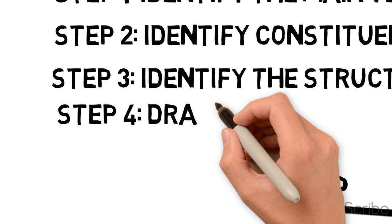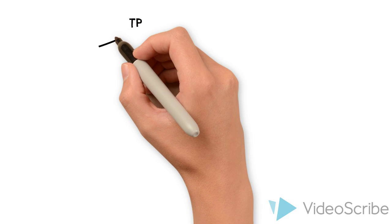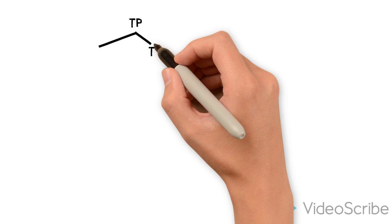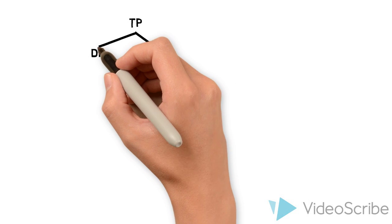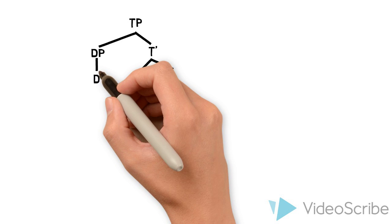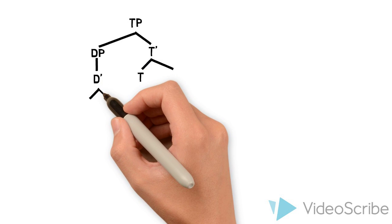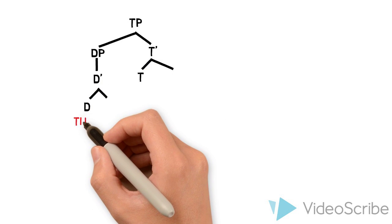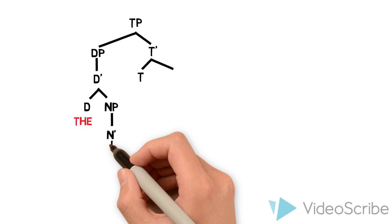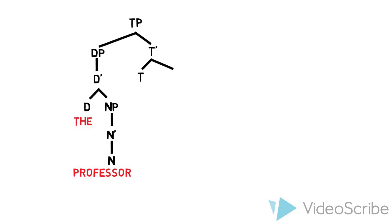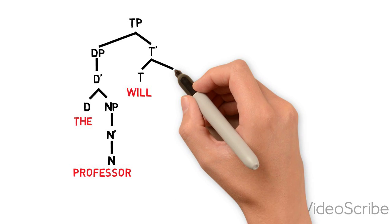Step 4, we are now ready to draw the tree. So first of all, we are going to draw the TP shell as follows, including full X-bar structure. The subject, the professor, is going to be a DP with an NP complement. Will will occupy T.